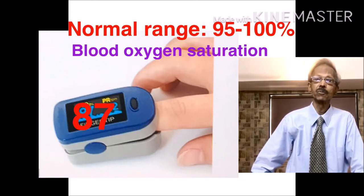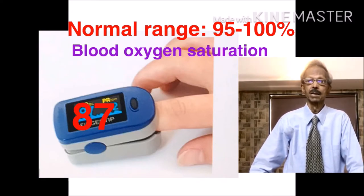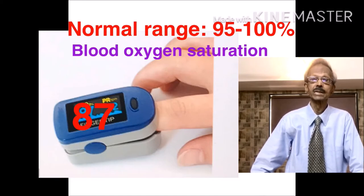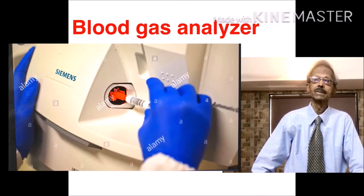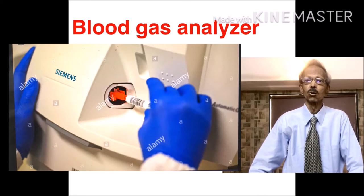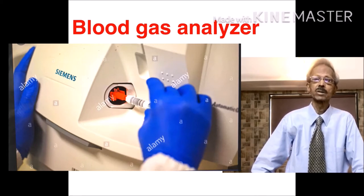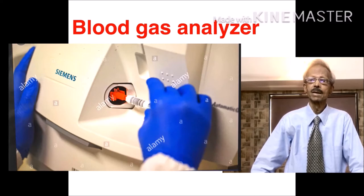Normal range is 95–100%. Hence, his arterial blood was sent to the laboratory for blood pH, oxygen, carbon dioxide and bicarbonate levels, and the report was as follows.